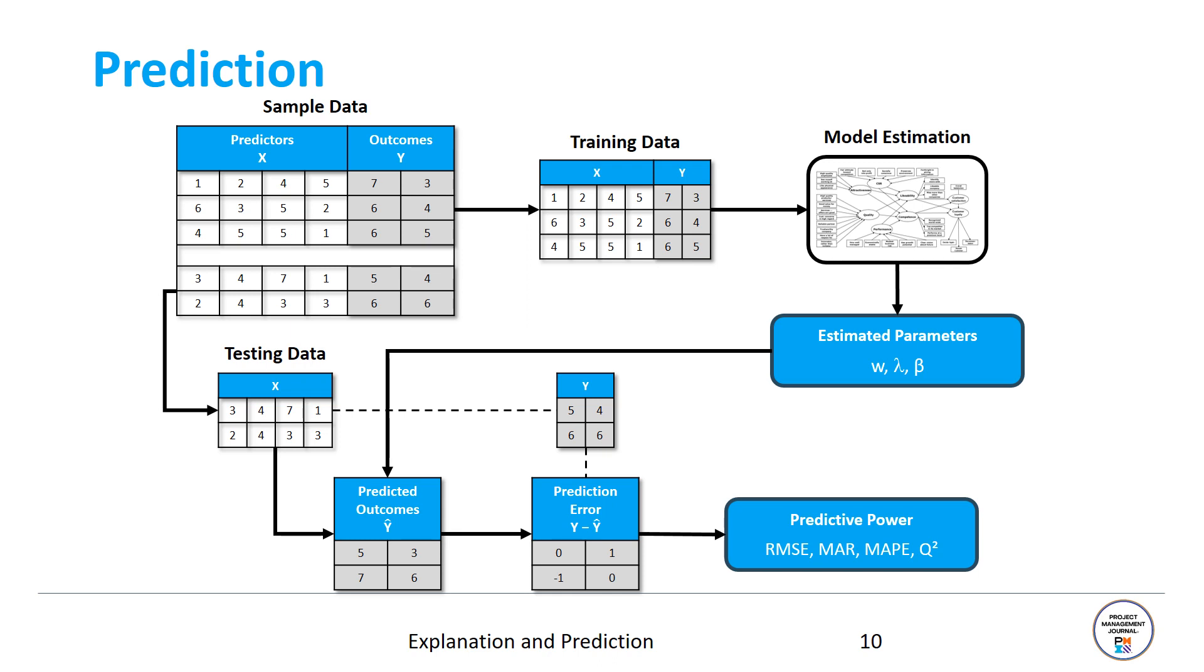We would then take these estimated parameters and combine them with the predictor data in our testing, our holdout sample. By combining these, we can actually generate predictions, predicted outcomes for the outcome variables y. The important point here is that these two observations for which we engage in prediction, for which we compute these predicted outcomes, were not part of the model estimation. They were taken out. But the nice thing is, we actually know the true values of these outcome variables. For example, for the fourth observation and the first y variable, the true value is a 5. But these were actually not used in the estimation process. Now we can simply compute the divergence between what we predict and the true values and these are the prediction errors.